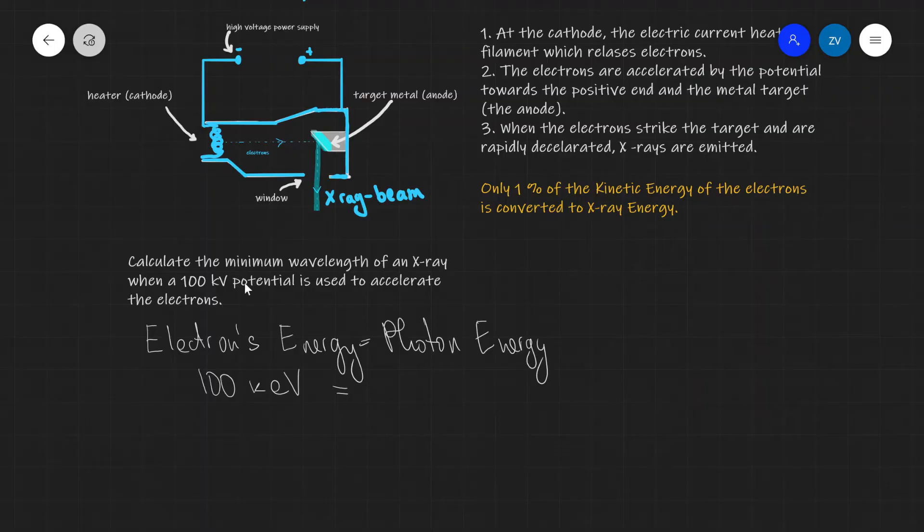I'm going to set that equal to the photon energy. As a revision, we have two formulae for the photon energy. Let's just write them down over here on the side. One of them is hc over lambda. The other one is, of course, that the energy of a photon is hf. Now, because in this case we're looking for the minimum wavelength, I'm going to be using this equation. If they were asking us for the maximum frequency, for instance, I would have used this one over here.